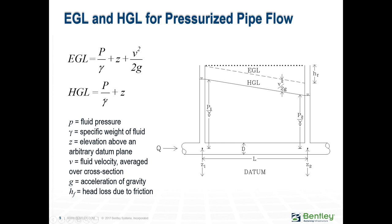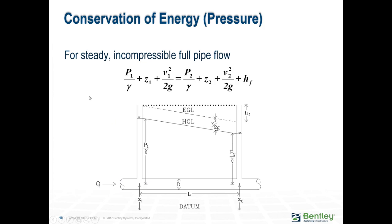For the pressurized portion of your system, if you have pressure readings and you want to convert them to hydraulic grade line, all you have to do is add the elevation of that point where you took that pressure reading, and now you have the hydraulic grade line measurement at that point. Basically what we're doing here is comparing the values from point one and point two using the conservation of energy: energy in one has to equal the energy in two plus any friction head losses.